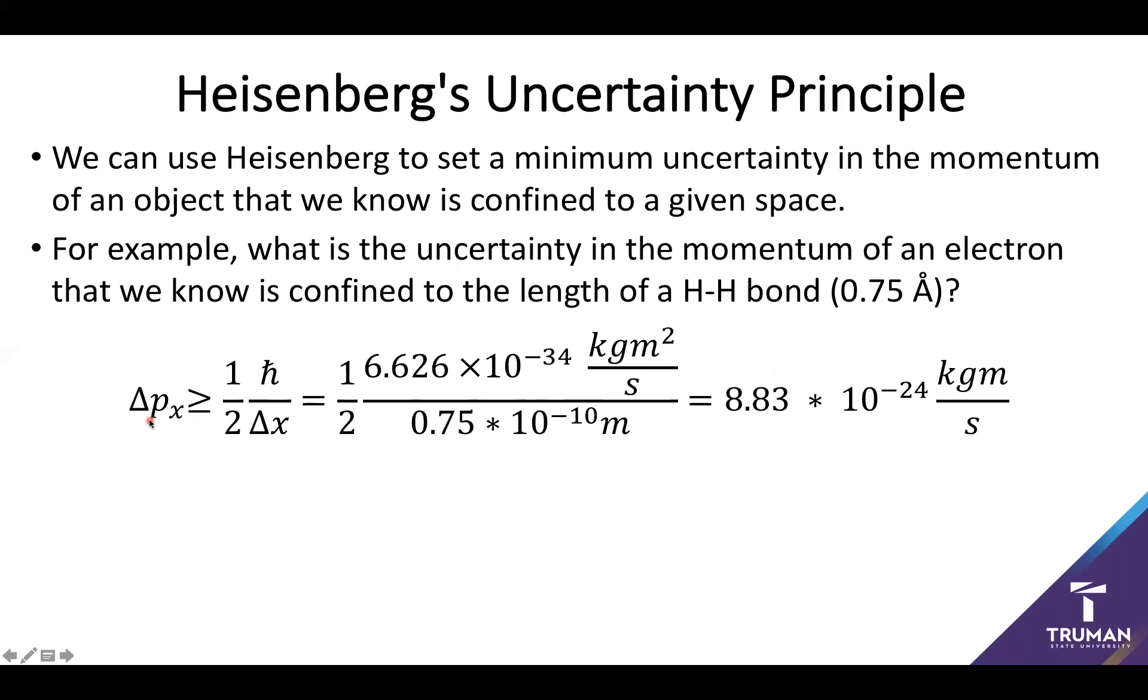Then what I'm going to want to make note of is that one angstrom is 10 to the negative 10 meters. Go ahead and put that in, let unit cancellation work, and we have the uncertainty of the momentum of an electron along a hydrogen hydrogen bond. However, let's be honest, we normally don't think in momentum.